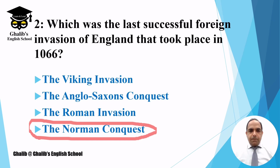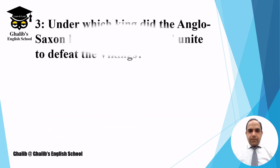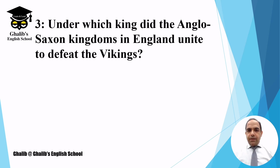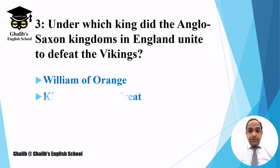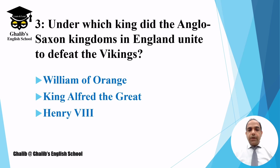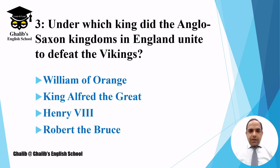Question number three: under which king did the Anglo-Saxon kingdom in England unite to defeat the Vikings? The options are William of Orange, King Alfred the Great, Henry VIII, or Robert the Bruce. The answer is King Alfred the Great.